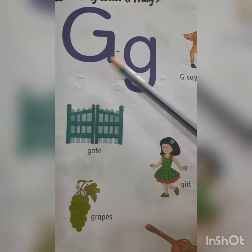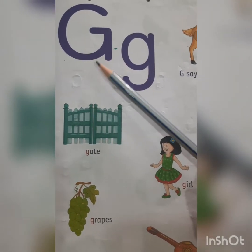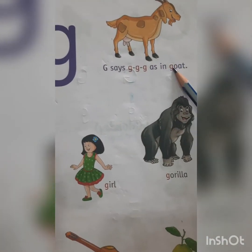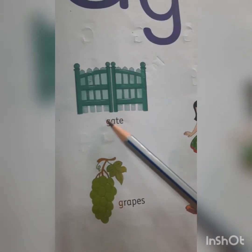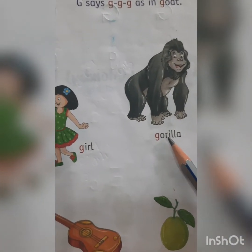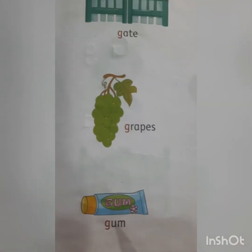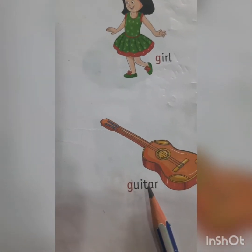Which letter is this children? This is letter G. Capital G. This is small g. What is the sound of G? It is 'G' in goat. Spelling of goat: G-O-A-T. Goat. Say the name of the picture. G-A-T-E. Gate. G-I-R-L. Girl. G-O-R-I-L-L-A. Gorilla. G-R-A-P-E-S. Grapes. G-U-M. Gum. G-U-I-T-A-R. Guitar.